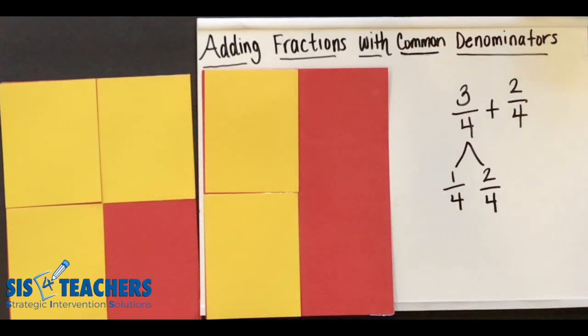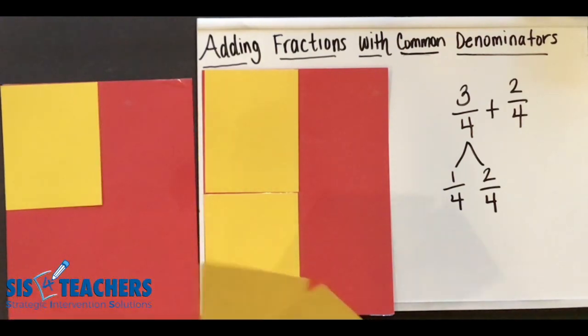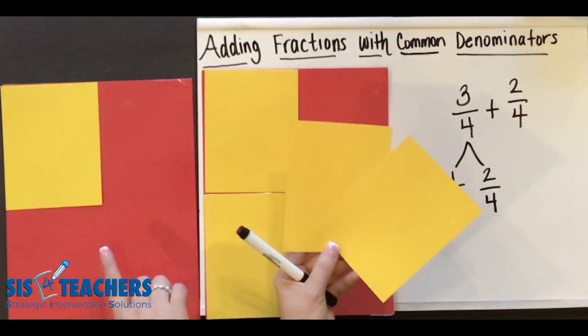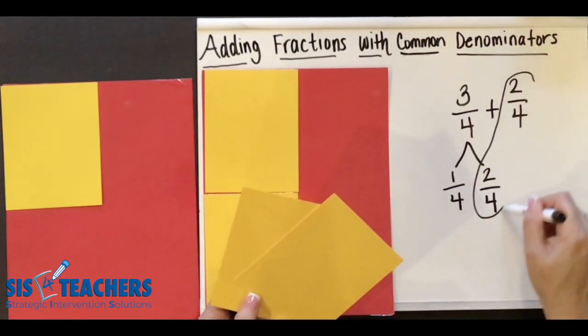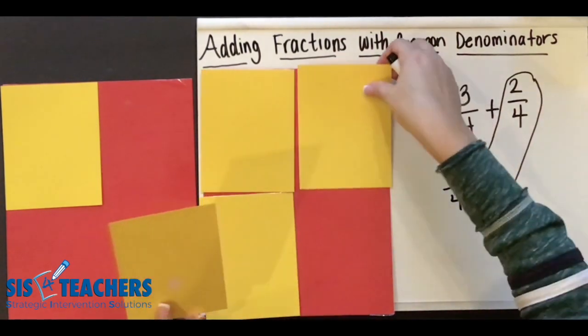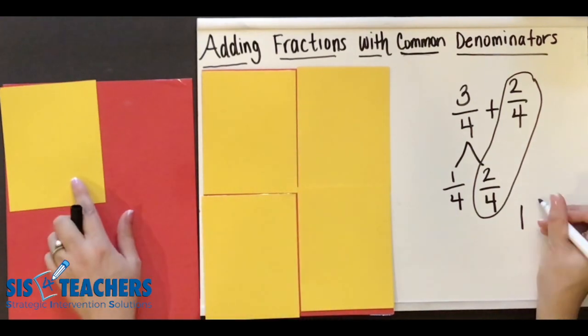So I'm going to come over here, technically smash and decompose that three fourths, just like it says, into two fourths and one fourth. I'm going to combine my two fourths or compose my two fourths with my other two fourths to get that nice friendly one. So here I have the one whole and I'm left over with one fourth.